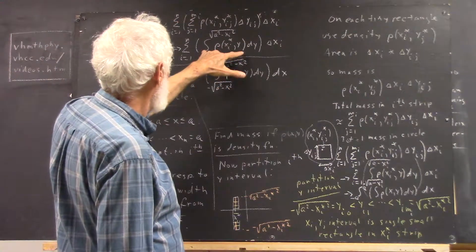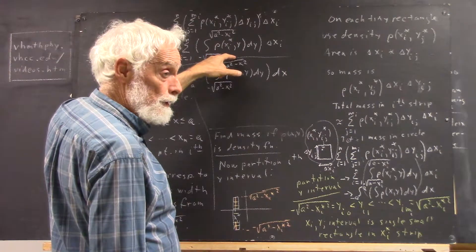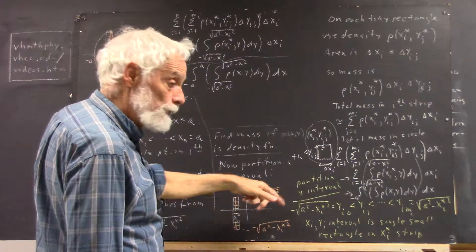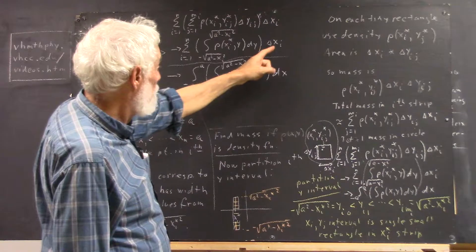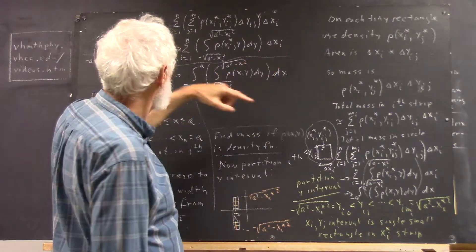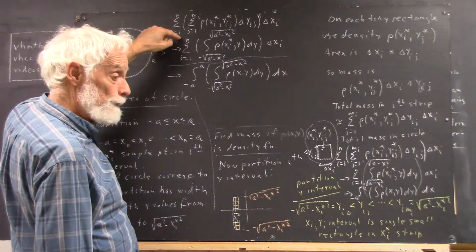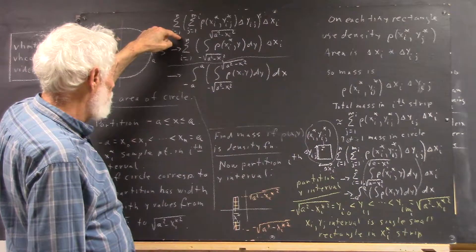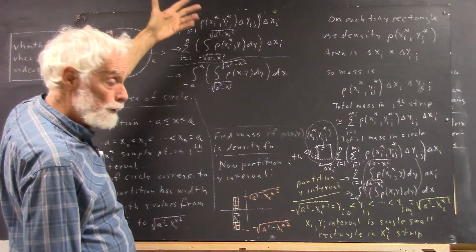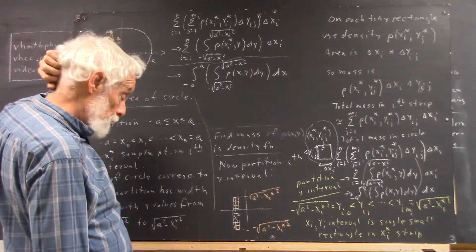Then we take that integral for every sub-interval, multiply it by the width of the sub-interval, sum it up from i equals 1 to n, and we have our total mass.